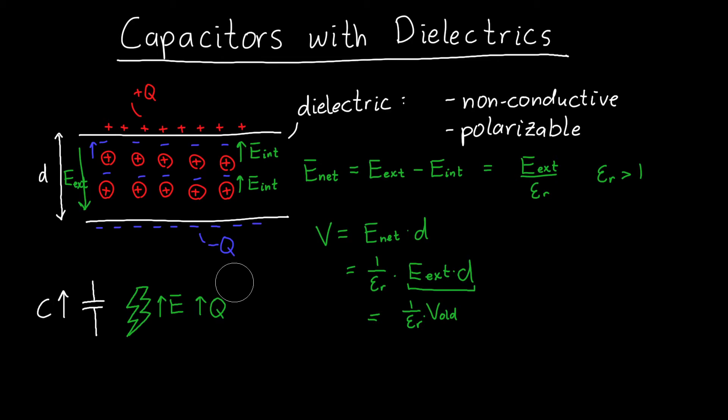So now we can calculate the capacitance of our new capacitor with the material inside, which we know is just equal to, in general, the charge on one of the plates, or the magnitude of the charge, divided by the voltage between the plates. And so the charge is exactly what it was before, it hasn't changed.